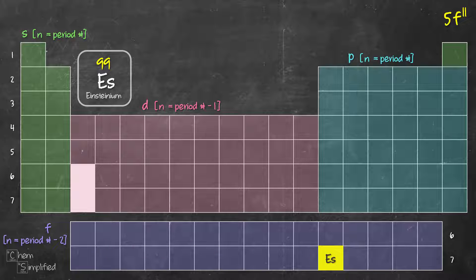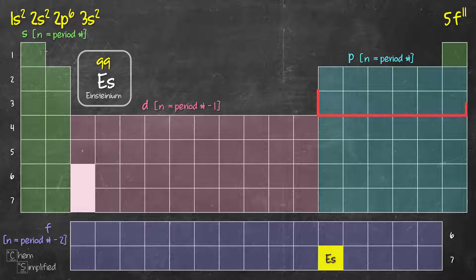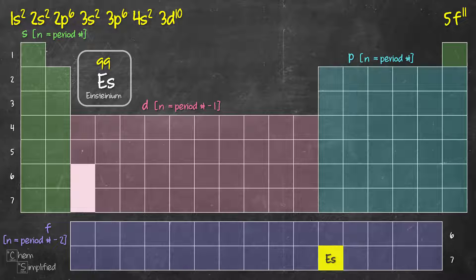To complete the full electron configuration, starting from the top: Period 1 — 1s2. Period 2 — 2s2, then 2p6. Period 3 — 3s2, then 3p6. Period 4 — 4s2. Then the D block: remember, it's period minus 1, so not 4d but 3d — and D holds 10 elements, giving us 3d10. After that, we proceed to the P block in period 4: 4p6.